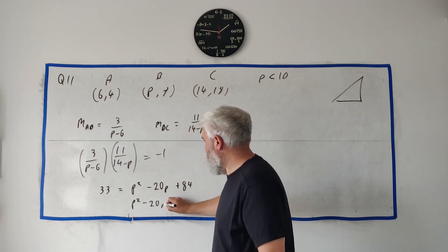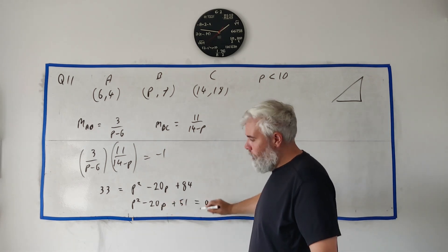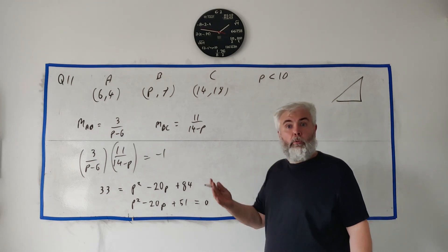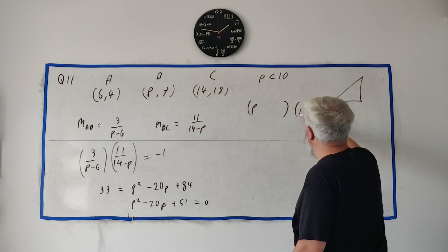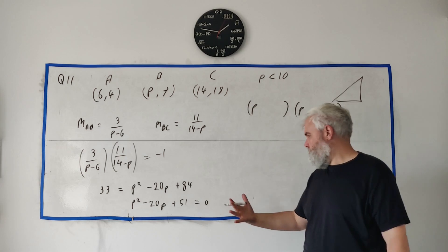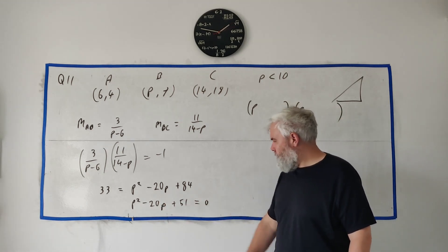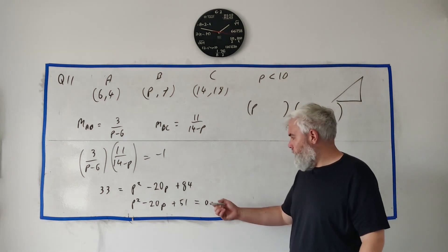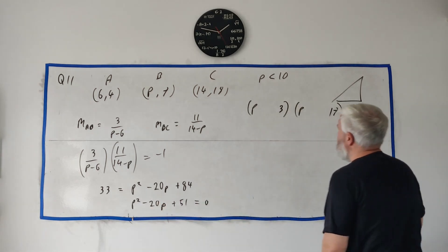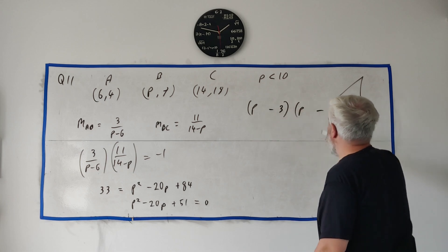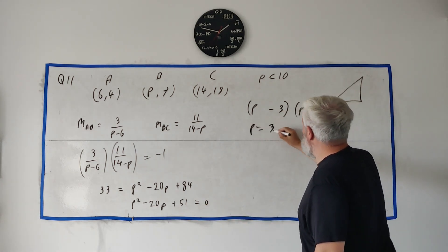Cleaning this up we get p squared minus 20p plus 51 equals zero. We have a quadratic — let's hope it solves neatly. Factoring into two brackets: we need two numbers that multiply to 51 and add to minus 20. Checking: 3 and 17 multiply to 51 and add to 20. So with minus 3 and minus 17 we get (p minus 3)(p minus 17) equals zero, giving p equals 3 or p equals 17.